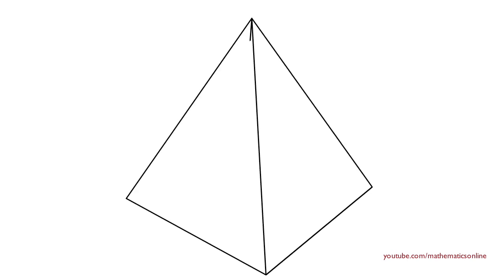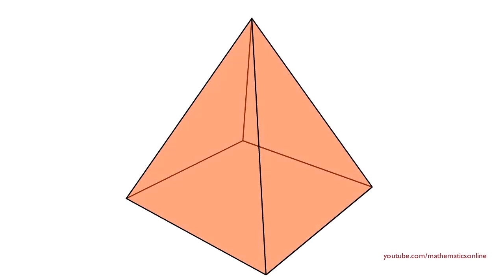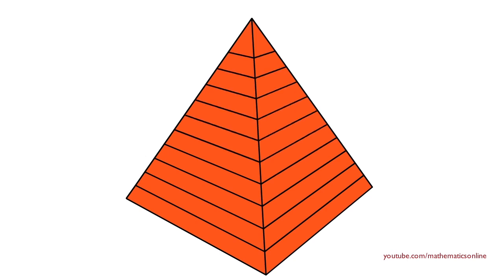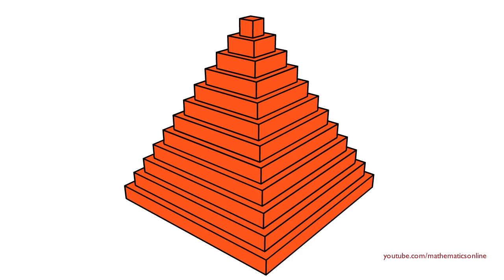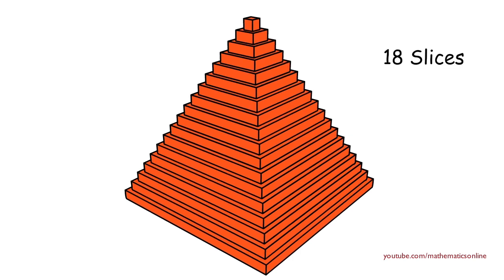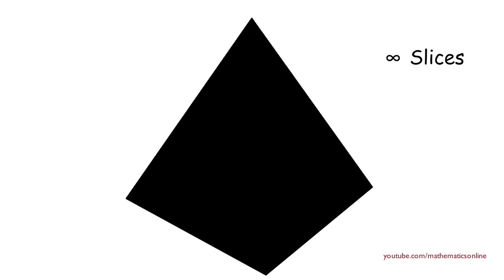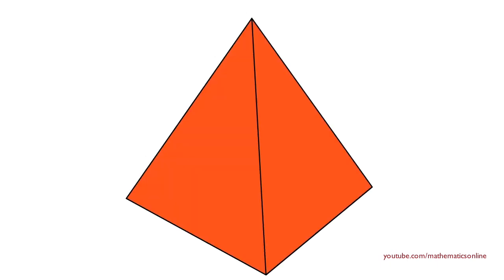First we'll create a pyramid with a square base and fill in its volume. Next we divide the height of the pyramid into equal vertical slices, and we use this as a reference to build a step pyramid. A very important thing to notice is that the more slices the step pyramid has, the closer it gets to the shape of the square pyramid. And if the step pyramid has an infinite amount of slices, then its volume equals the volume of the square pyramid.